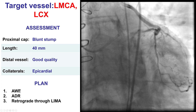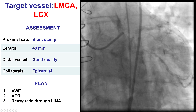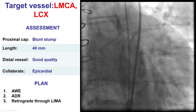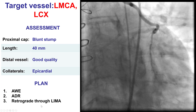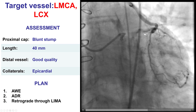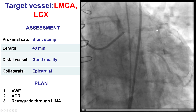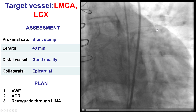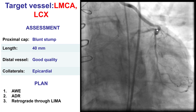Therefore, the plan was to try first with wire escalation, followed by antegrade dissection and re-entry. And then use retrograde through the LIMA only as a last resort, given the potential risks of compromising flow through the main vessel supplying the coronary circulation.